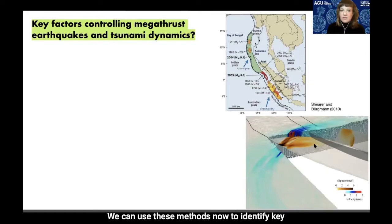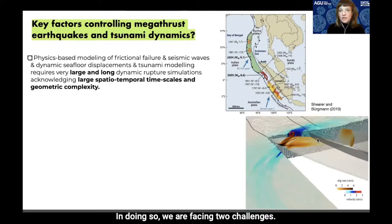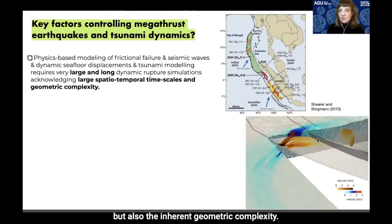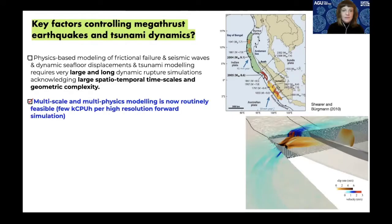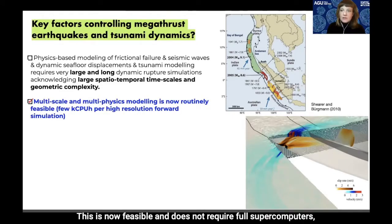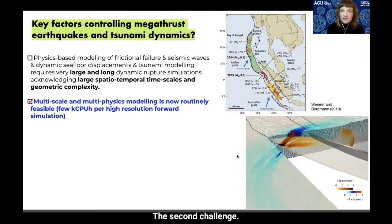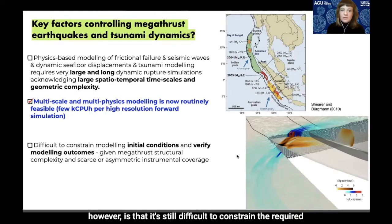We can now use these methods to identify key factors controlling megathrust earthquakes and tsunami dynamics. We face two challenges: the first is that physics-based modeling on these scales requires very large and long simulations acknowledging not only large spatiotemporal scales but also inherent geometric complexity. This is now feasible and requires only a few thousand CPU hours, well within the range of a typical supercomputing allocation or institute cluster. The second challenge is that it remains difficult to constrain the required initial conditions and verify modeling outcomes.